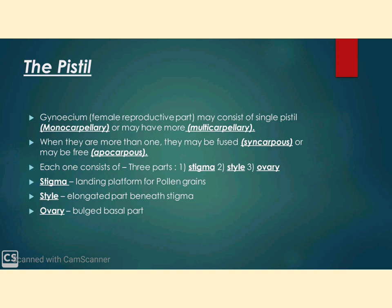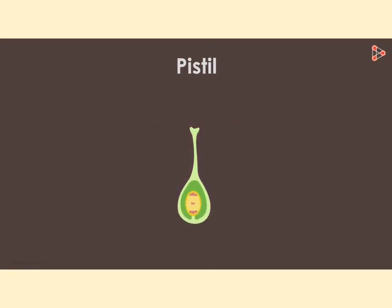The next topic is the female reproductive part of the flower, i.e., pistil or gynoecium. If the flower contains a single pistil, it is monocarpillary. If it contains more than one pistil, it is multicarpillary, because pistil is also known as carpel. If the carpels are more than one, they may be fused as in syncarpous, or may be free as in apocarpous. Each pistil consists of three parts: stigma, style, and ovary.